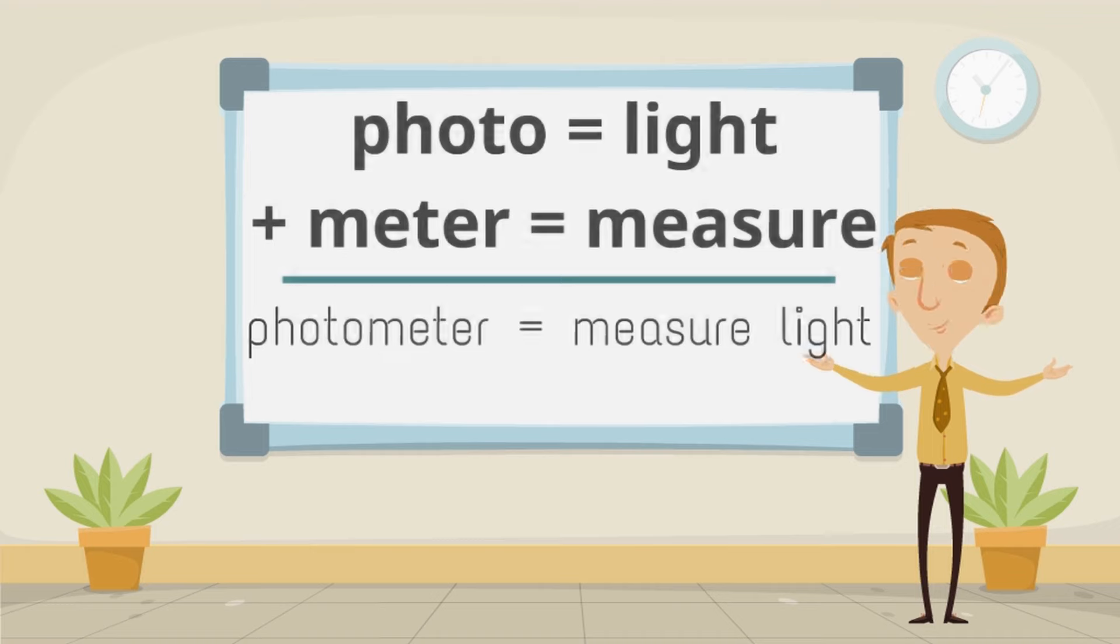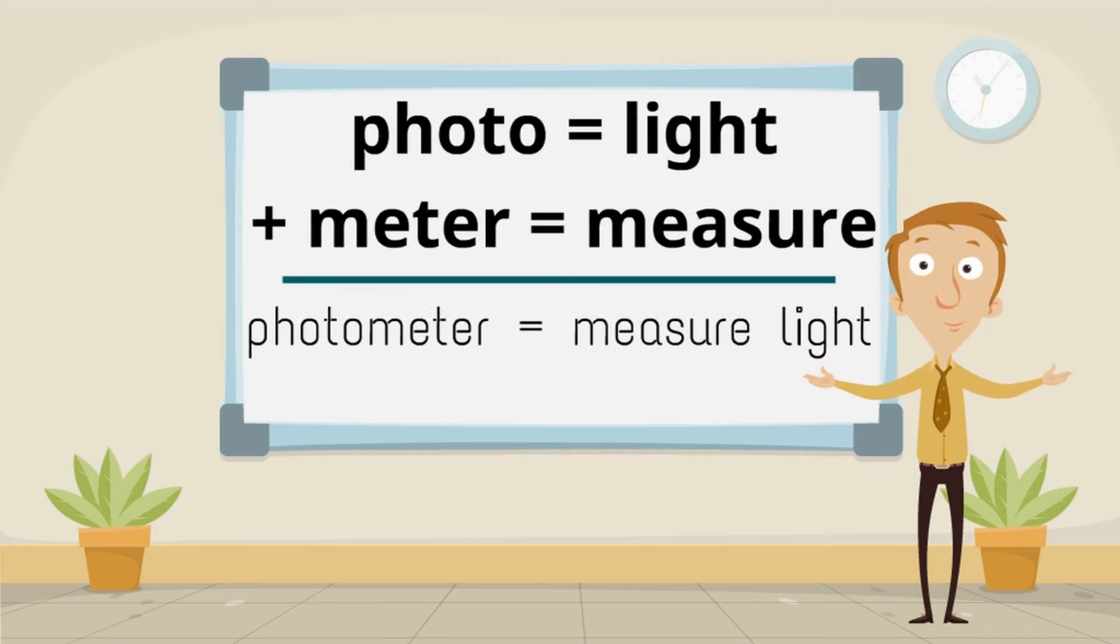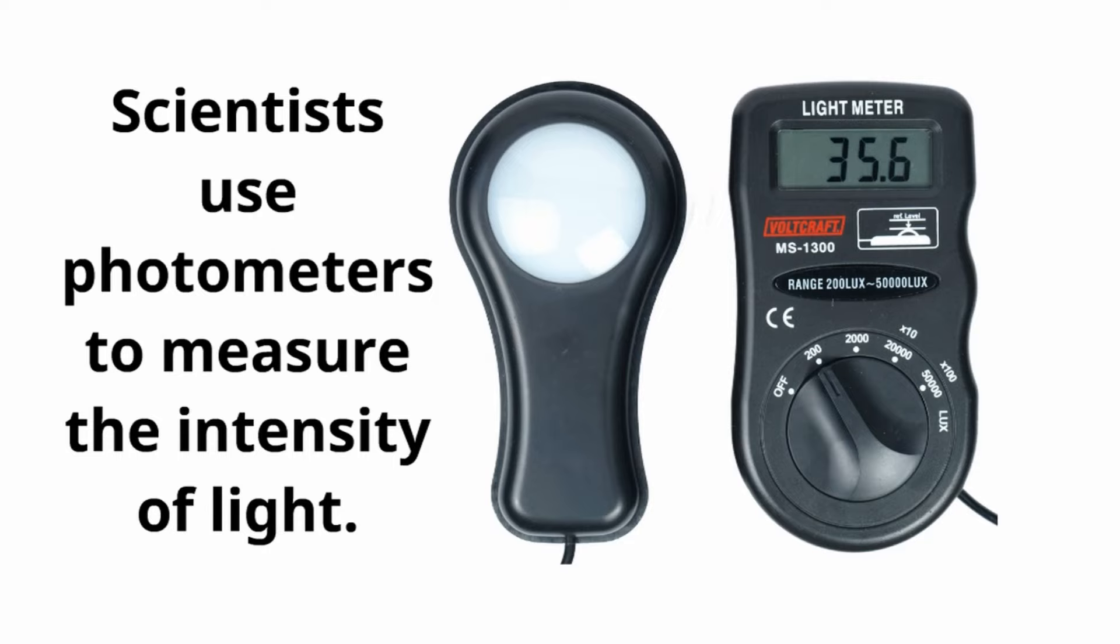Photo, meaning light, plus meter, meaning measure, make photometer—to measure light. Scientists use photometers to measure the intensity of light.